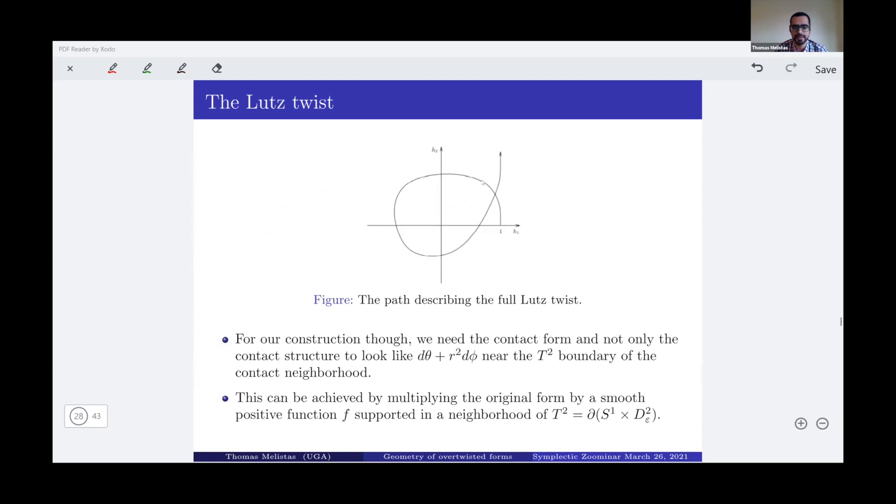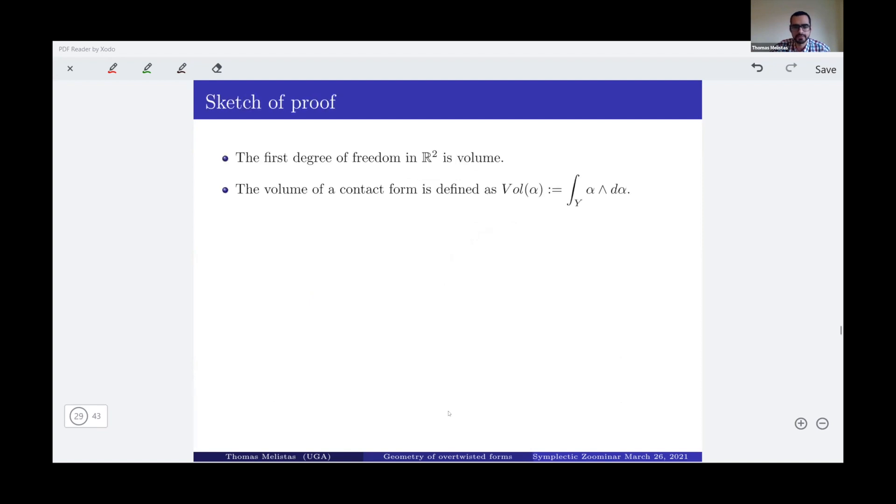Now I have those properties. Maybe we can visually understand the path better in this way. So this is h_1, h_2, the path h_1, h_2 on the plane. And this is what our full large twist looks like. Now for our construction is dynamical. And not only the contact structure needs to look like that, because what I want to do is I want to carve out a solid torus and then replace the solid torus by another solid torus, which has a different form. So in order to be able to glue at the boundary of this solid torus, I need my form to really look like that at the boundary, which can be achieved by multiplying by a positive function, which is compactly supported around this T^2.